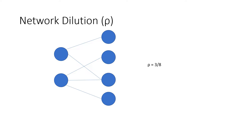Let me discuss network dilution first. On the screen you can see a simple neural network with two neurons in the input layer and four neurons in the subsequent layer. If both neurons were connected to all neurons in the next layer, we would call it a fully connected network, and in that case the dilution factor — denoted by the symbol rho — would be equal to zero, meaning it is zero percent diluted.